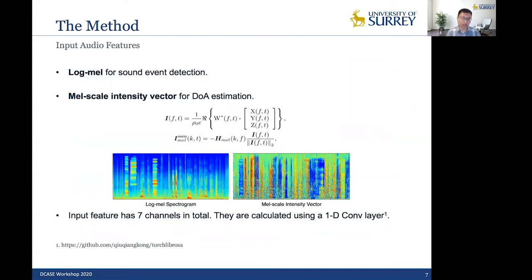Then I'll talk it in detail. So the input audio features we used are still log mel for sound event detection and mel scale intensity vector for DOA estimation. And the audio features and the mel scale intensity vector are plotted here. And the input features have seven channels in total that are calculated using a 1D convolutional layer.